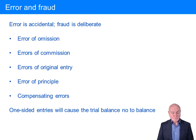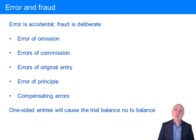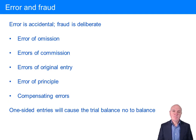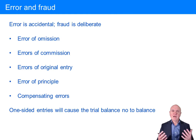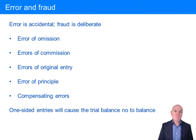Error of omission: you get an invoice coming in that you have to post, but it falls down the back of your desk. So you never do the debit expense, credit the creditor — whatever the proper entry is. Both sides of the entry are left out simply because the documentation has gone missing.